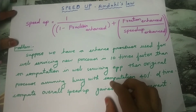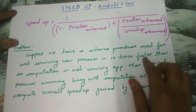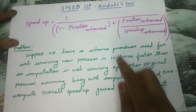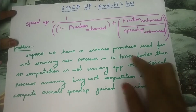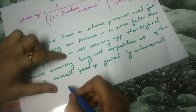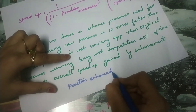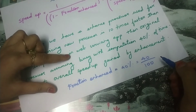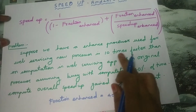First we have to find which one is fraction enhanced and which one is speed-up enhanced in this problem. Fraction enhanced should be in fraction form. Here, computation takes 40% of the time. 40% can be written as 40 divided by 100, which is in fraction form. So fraction enhanced is equal to 40% which equals 40 divided by 100, or 0.4.